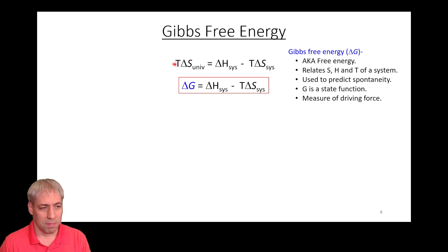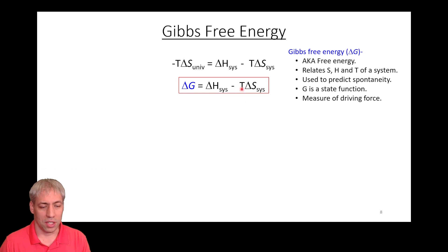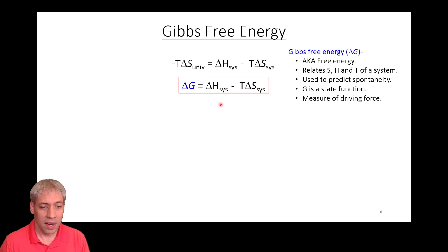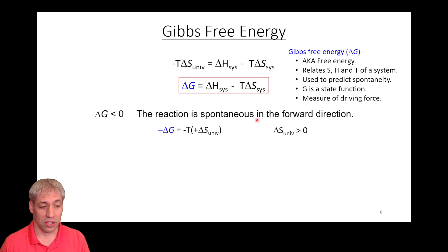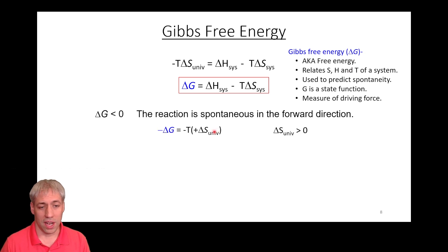We replace negative T times delta S universe with delta G. So delta G equals delta H system minus T times delta S system — all defined in terms of the system and measurable temperature. That gives us the Gibbs free energy equation, which tells us the driving force for a reaction to occur.